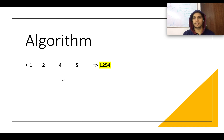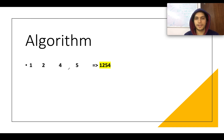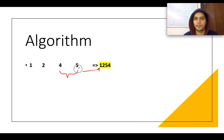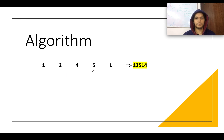So let's look at the algorithm. The input number is [1, 2, 4, 5] and the next higher number that can be generated is [1, 2, 5, 4]. Only these two numbers, 4 and 5, get reversed to 5, 4.